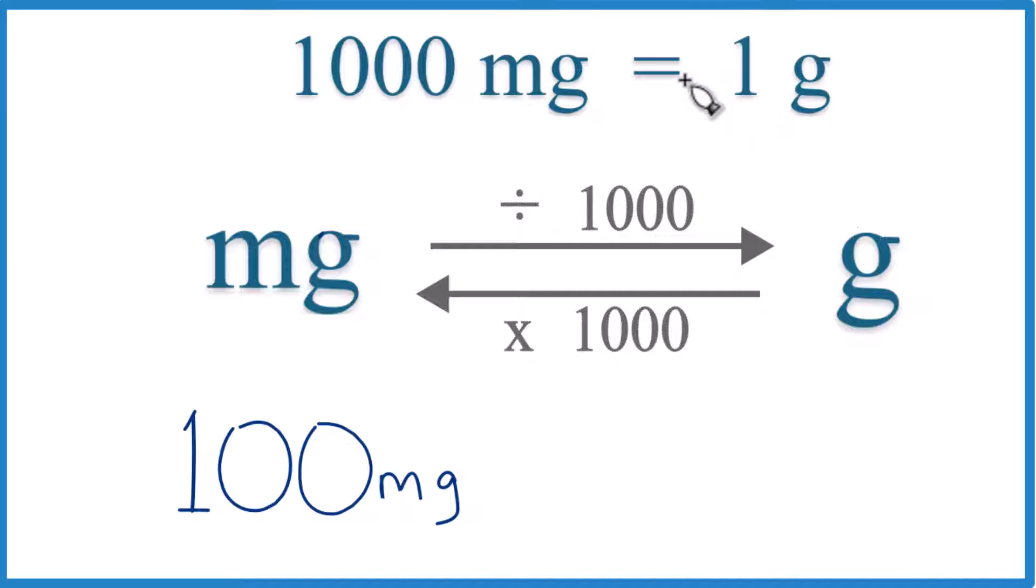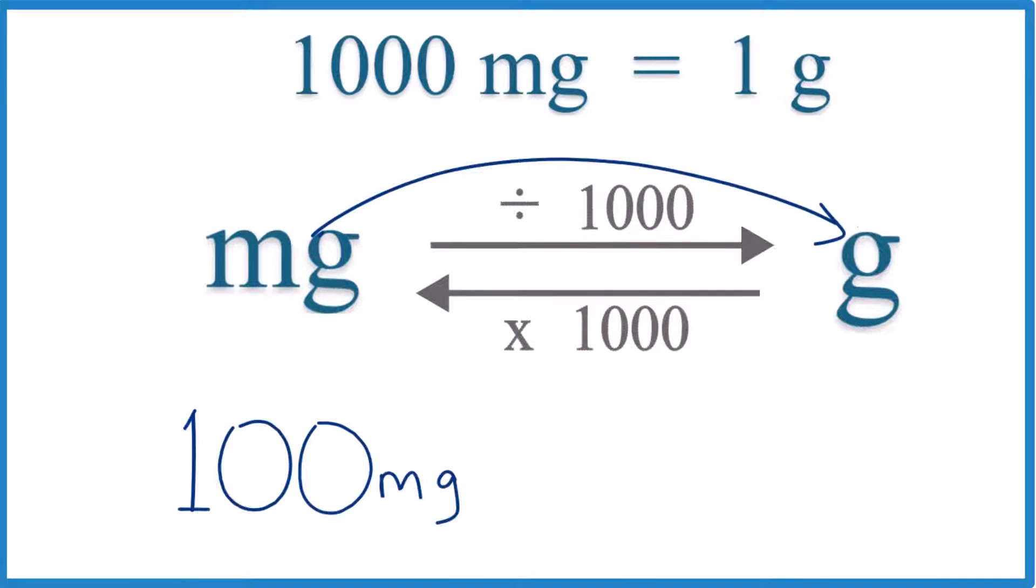We call this a conversion factor, and we need it when we go from milligrams to grams or grams to milligrams. So we have 100 milligrams. We're going from milligrams to grams. We're going to divide by 1,000, like this.